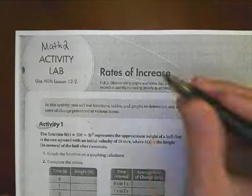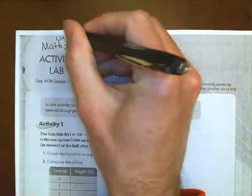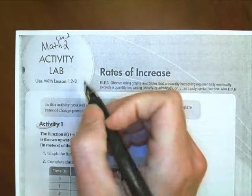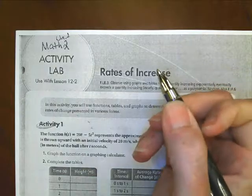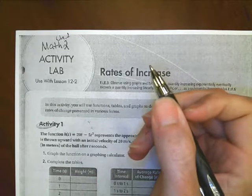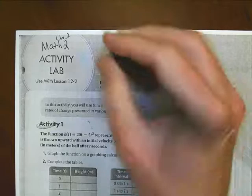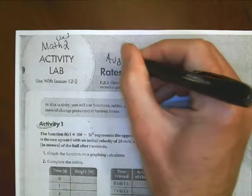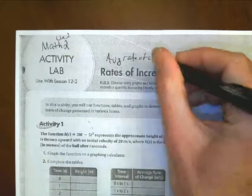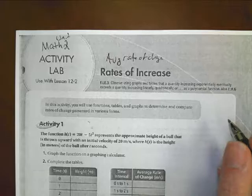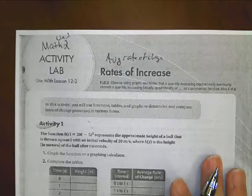Hi, this is Math 2, Unit 12, looking at the Activity Lab that goes with Unit 12. It could be with Lesson 1 or Lesson 2. I'm really not sure where you're going to put this in, or where your teachers are going to put this in. But this is a lesson on the rates of increase or average rate of change. That's what we're going to talk about today. It's not a difficult concept, but I want to run through the activity with you in case you didn't cover this in class.